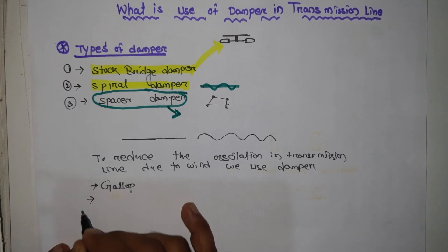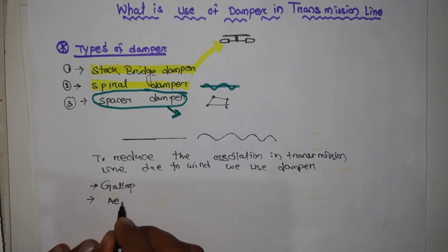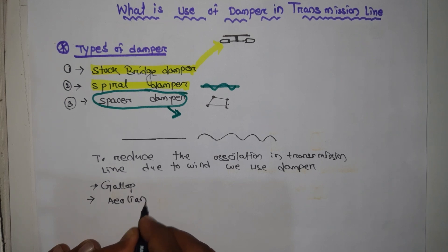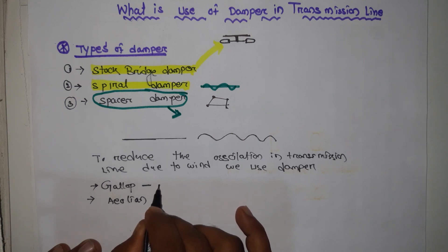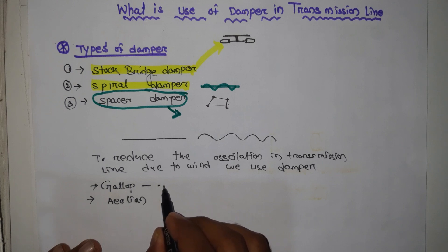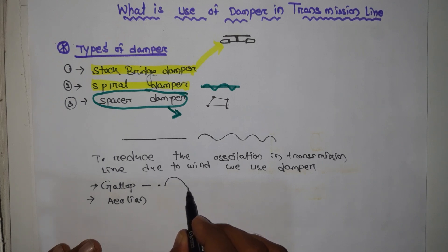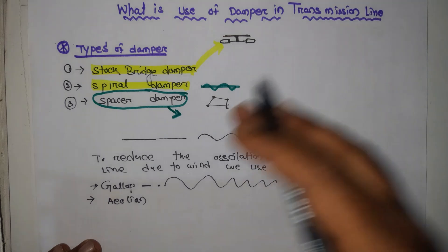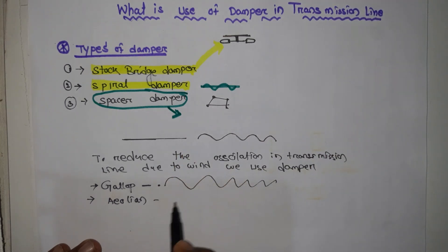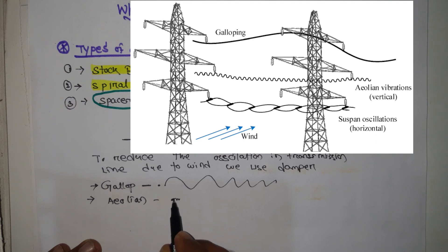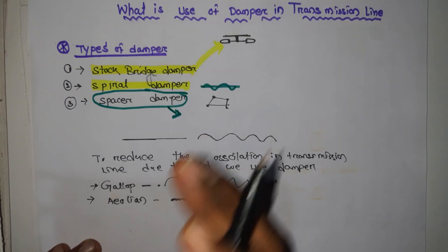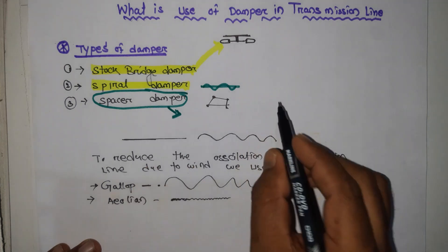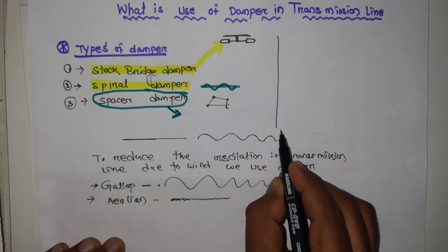The oscillation due to wind is of two types. One is galloping oscillation, and the other is aeolian vibration. In galloping, the frequency is very low but the amplitude is high — the wire oscillates like dancing with large amplitude. In aeolian vibration, the frequency is faster but the oscillation amplitude is less.